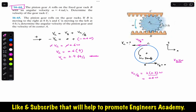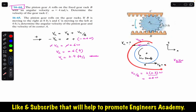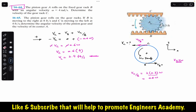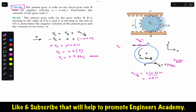The next problem says the pinion gear rolls on the gear rakes. Gear rake B is moving to the right at 8 feet per second and gear rake C is moving to the left at 4 feet per second. We are required to determine the angular velocity of the pinion gear and the velocity of its center A.